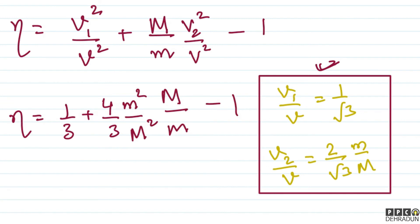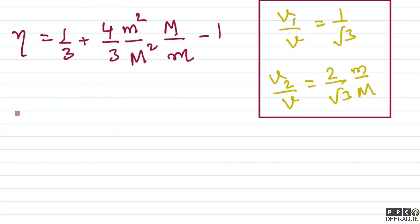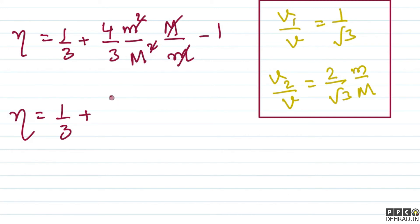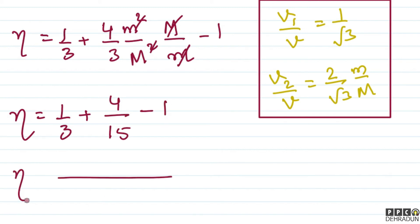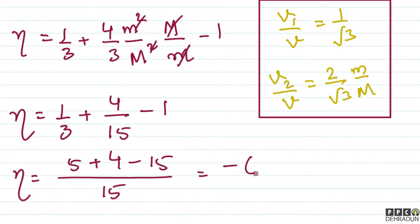So eta equals 1 upon 3 plus, after cancellation of one small m and one capital M, we get small m upon capital M multiplied by 4 upon 3. Since small m upon capital M equals 1 upon 5, this becomes 4 upon 3 into 5, that is 4 upon 15, minus 1. Taking common denominator 15: 5 plus 4 minus 15 equals 9 minus 15, which is minus 6 upon 15, simplifying to minus 2 by 5.